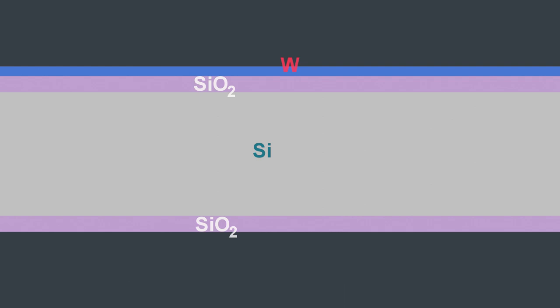Then, a 200 nanometer tungsten layer was deposited by magnetron sputtering and patterned by photolithography and dry etching.